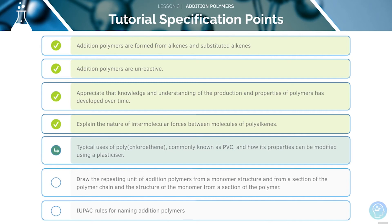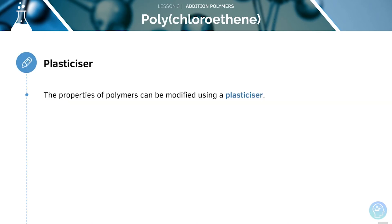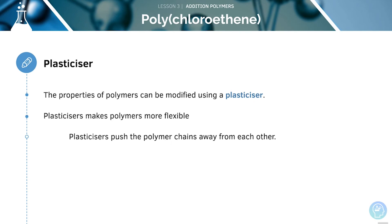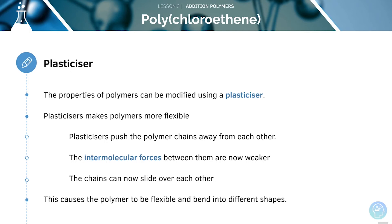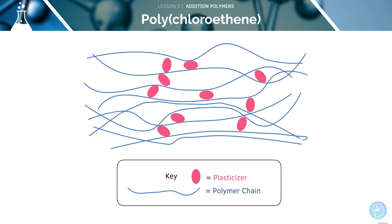Now, let's look at some uses of PVC. The properties of polymers can be modified using a plasticiser. A plasticiser makes a polymer more flexible by pushing the different polymer chains away from each other. As the chains are now further away, the intermolecular forces between them are weaker and therefore the chains can slide over each other. This causes the polymer to be flexible and bend into different shapes. This is a visual representation of what a plasticiser does.